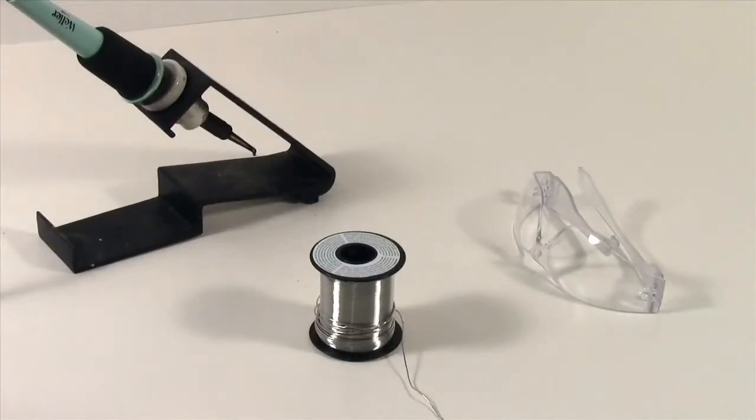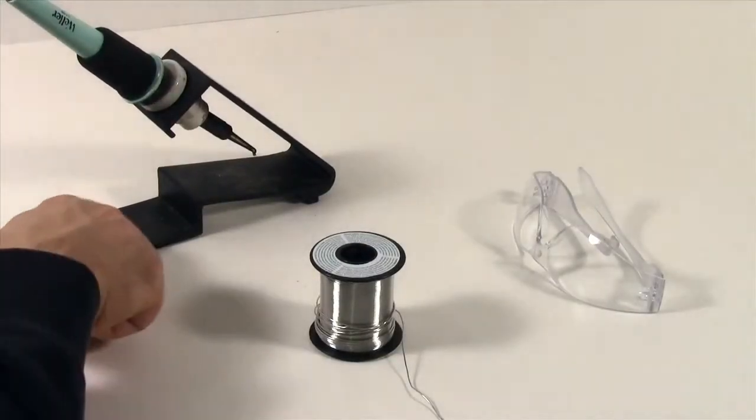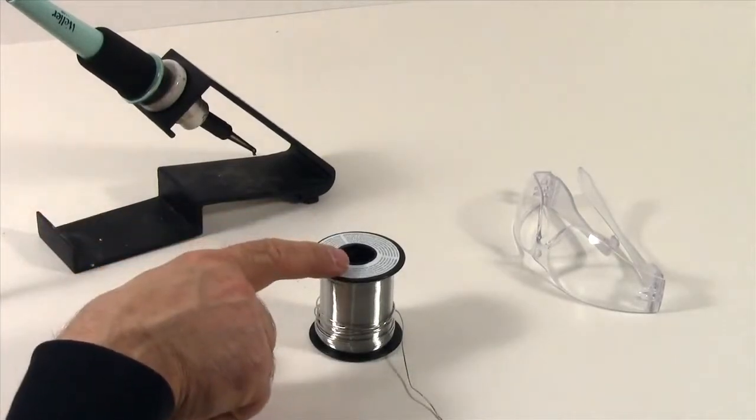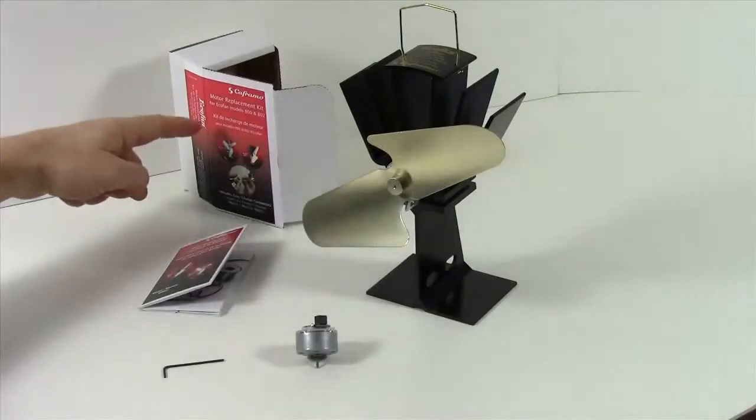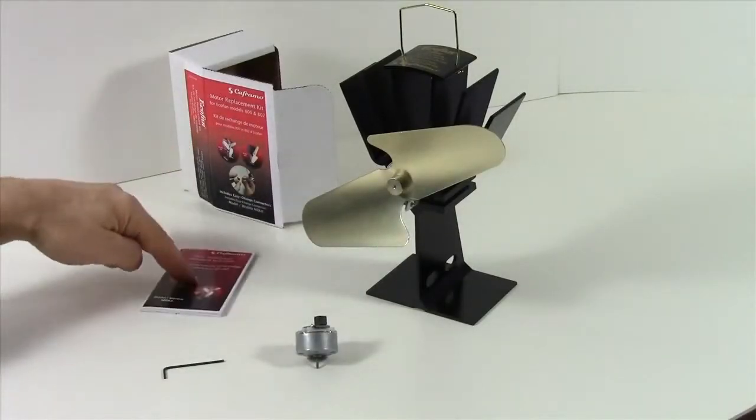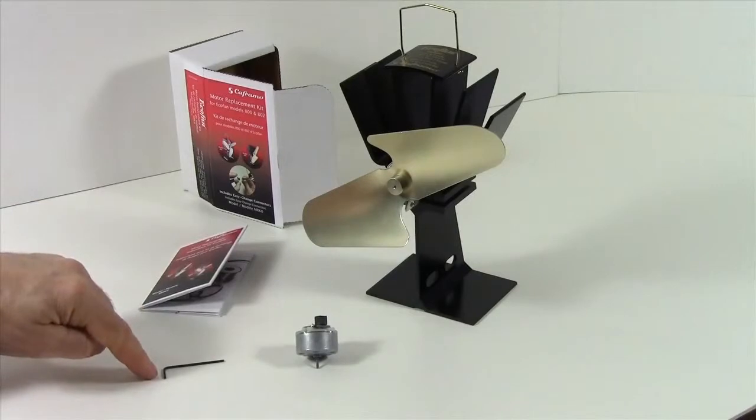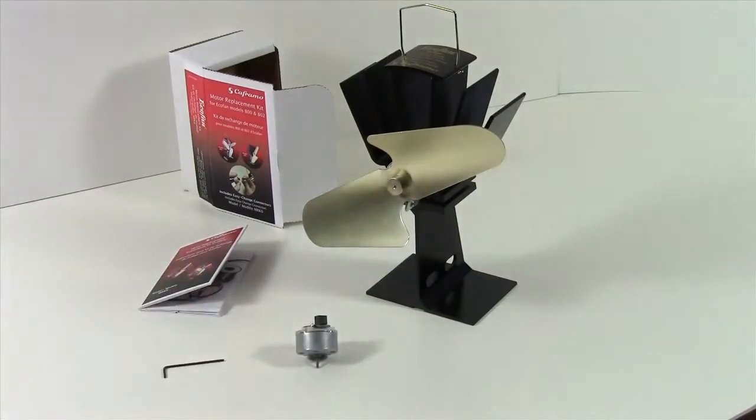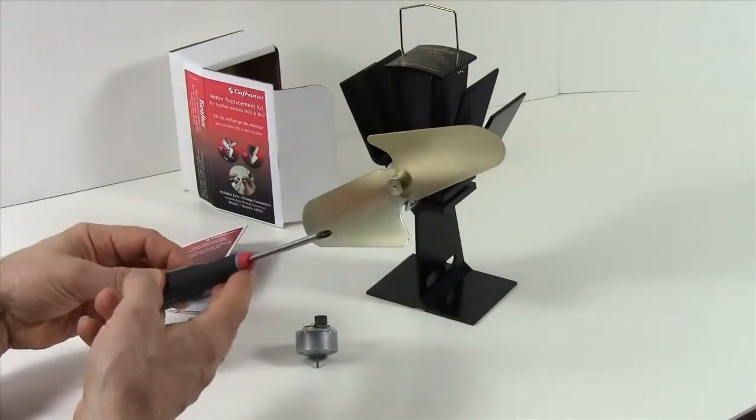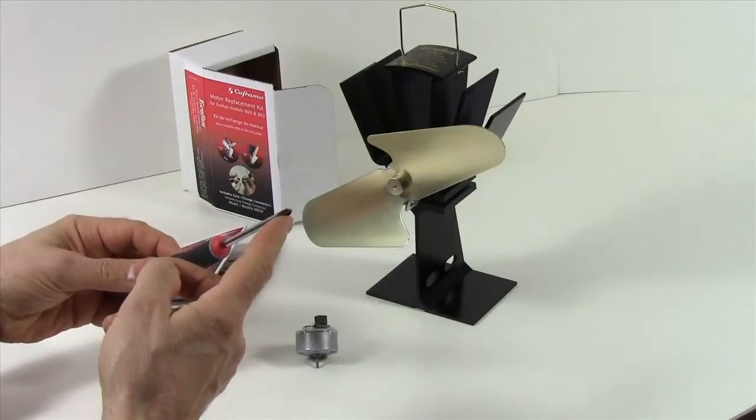For this procedure you will also require a soldering iron, some solder, and a pair of safety goggles. Inside the motor kit you will receive an instruction manual, an allen key, and a brand new motor. The only other piece of equipment we're going to need is a Phillips screwdriver, and the head of a Phillips screwdriver looks like this.